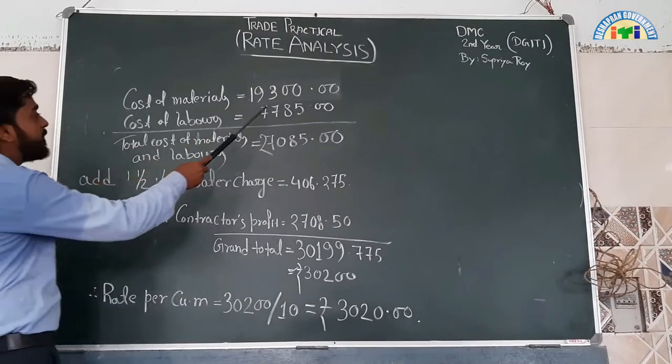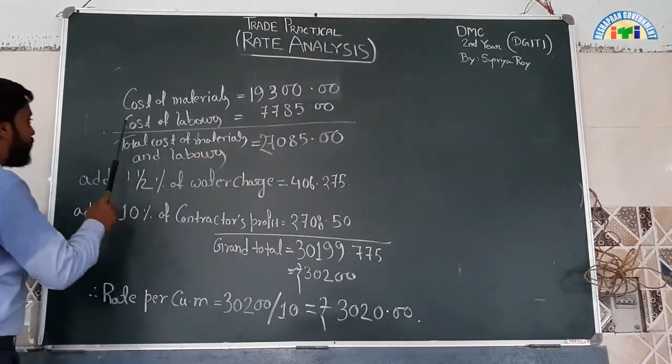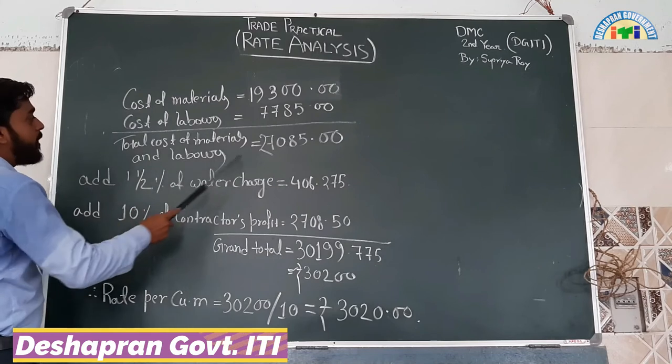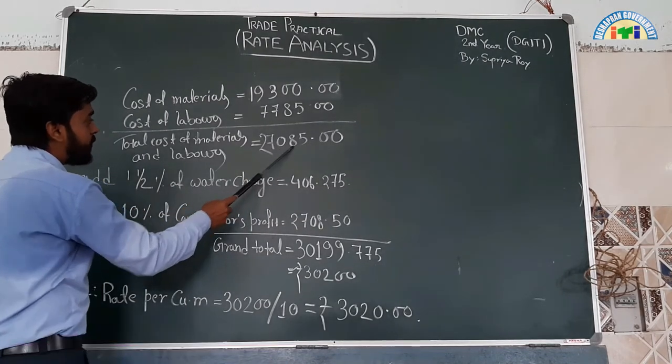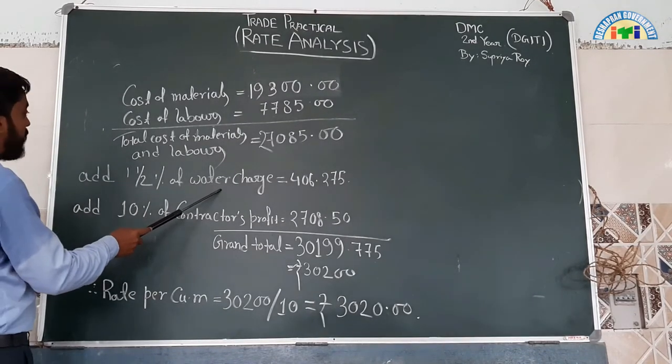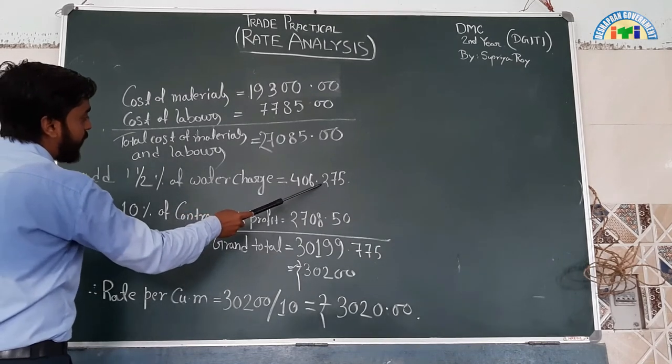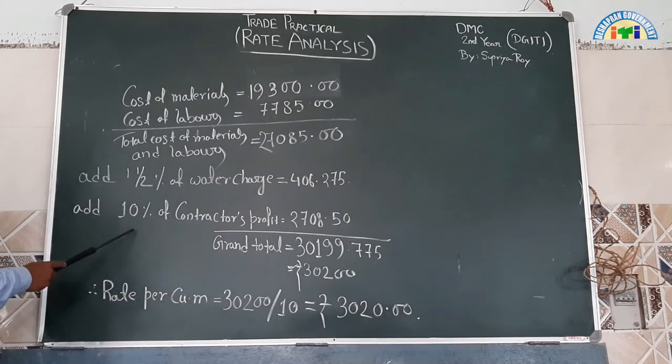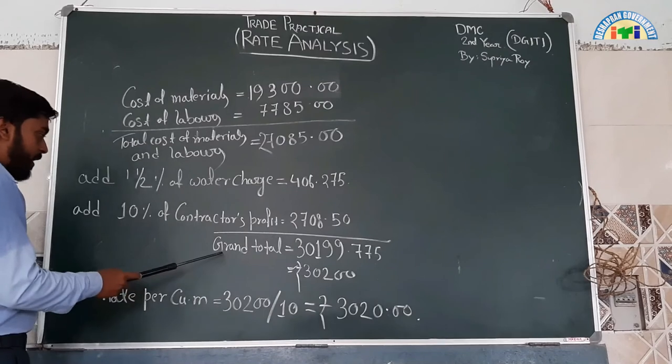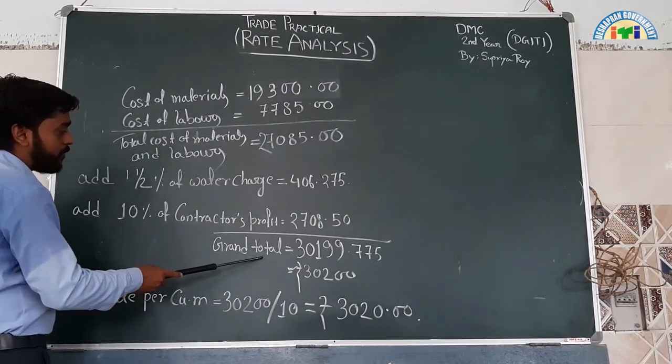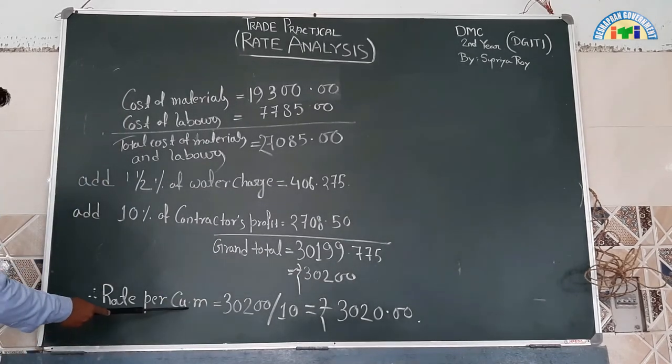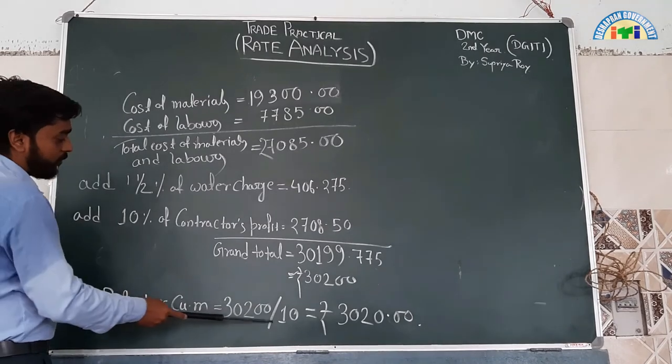Cost of material is 19,300 rupees. Cost of labor is 7,785 rupees. Total cost is 27,085 rupees. Add 1.5% water charge, which is 488.5 rupees. Add 10% contractor profit, which is 2,475 rupees. Grand total for 10 cubic meters is 30,200.5 rupees. Rate per cubic meter is 30,200 divided by 10, which equals 3,020 rupees per cubic meter.